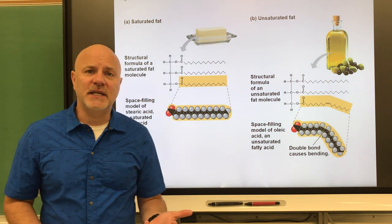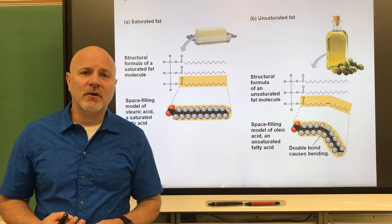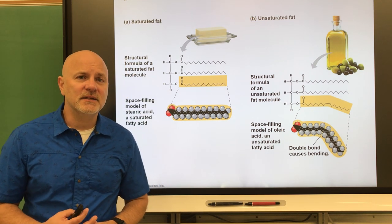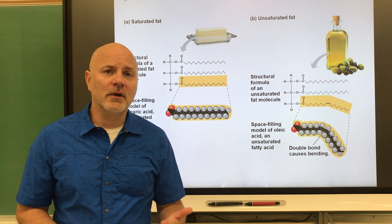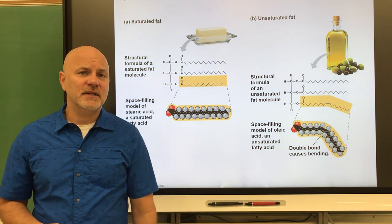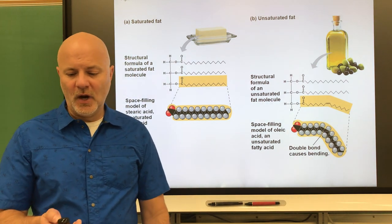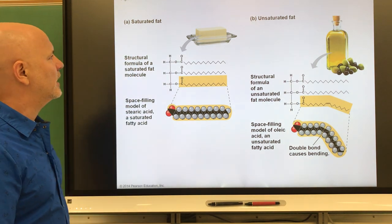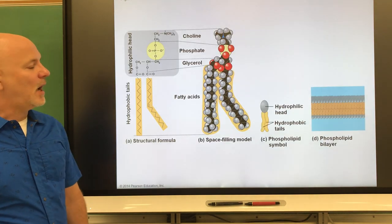For comparison, one gram of protein equals four calories, and one gram of alcohol equals seven calories.